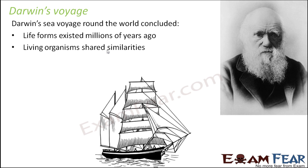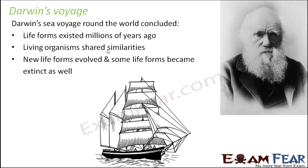Darwin also found that living organisms shared similarities — even though they are two different organisms or different species altogether, there were certain things which were similar between them. He found that all living organisms share some basic similarities, and with that he concluded that they must share a common ancestor. Like when two siblings look very similar, we ask if they are brother and sister — because siblings have a common ancestor, the same parents, and that is why they have the same inherited traits and look similar. So Darwin thought that since all living organisms share similarities, they all have a common ancestor.